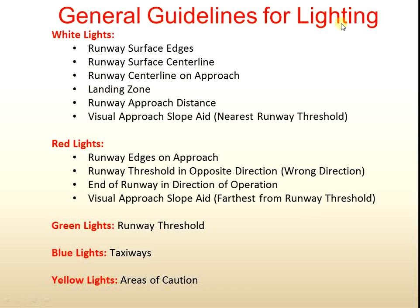The general guidelines for airport lighting cover various types of lights. We use white lights, red lights, green lights, blue lights, and yellow lights for different signals to the pilot. For white lights, these are used for runway surface edges, runway surface center line, runway center line on approach, landing zone, runway approach distance, visual approach slope edge, and the nearest runway threshold.